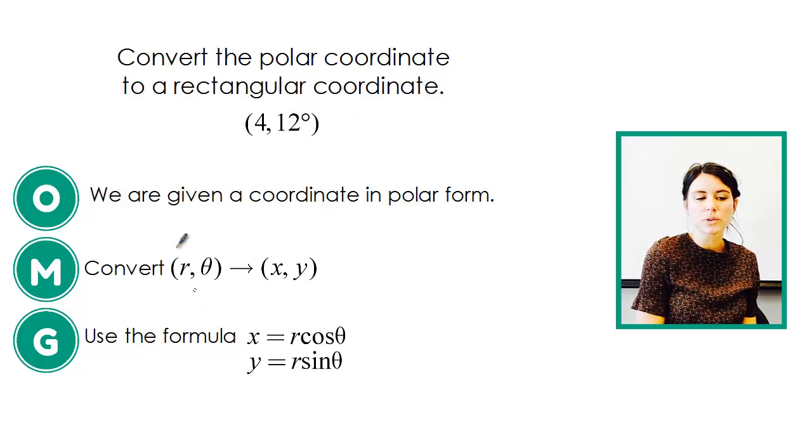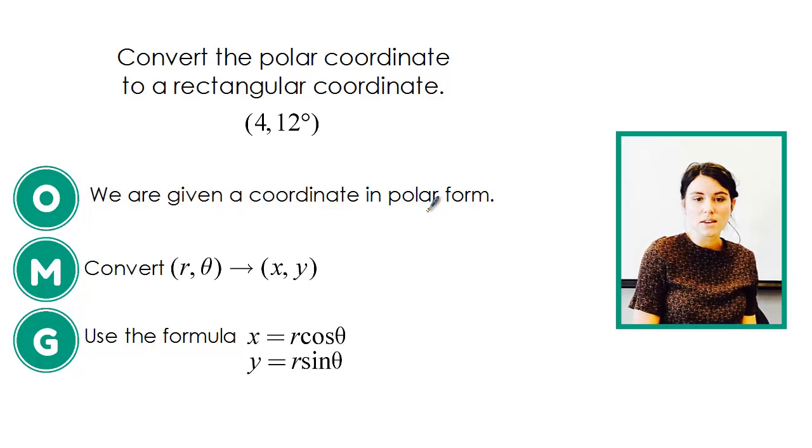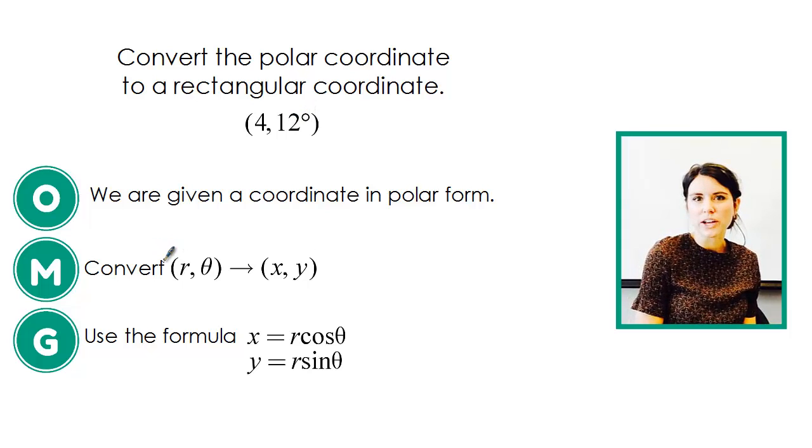So here's what we're doing. We first observe that we're given something in polar form because it has a degree symbol that's kind of our key, or if it had radians.